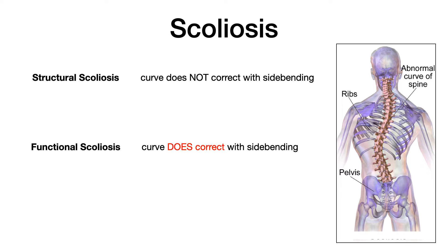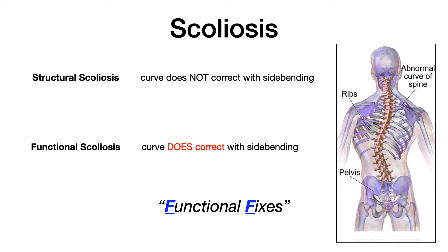The takeaway here is that if you have a patient with scoliosis and you introduce side bending as part of your assessment, and the curve gets better or even disappears, that's a functional scoliosis. For example, if the Cobb angle was 30 degrees and then goes down to 15 with side bending, you're dealing with a functional scoliosis. The way to remember this: functional fixes with side bending — just keep those Fs together and you'll never forget it.